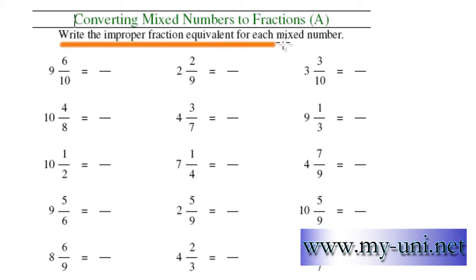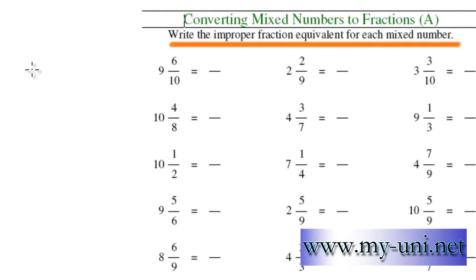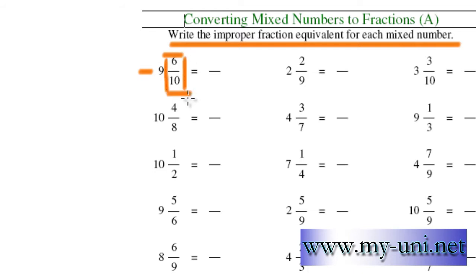Write improper fraction equivalent for each mixed number. What they're simply asking for is to convert these mixed fractions, or mixed numerals as they are known, into improper fractions. An improper fraction is defined as a fraction that has a numerator bigger than the denominator. A mixed number essentially has two components: one component is the whole number and the other component is the proper fraction beside it. The definition of a proper fraction is that it has a numerator smaller than the denominator.